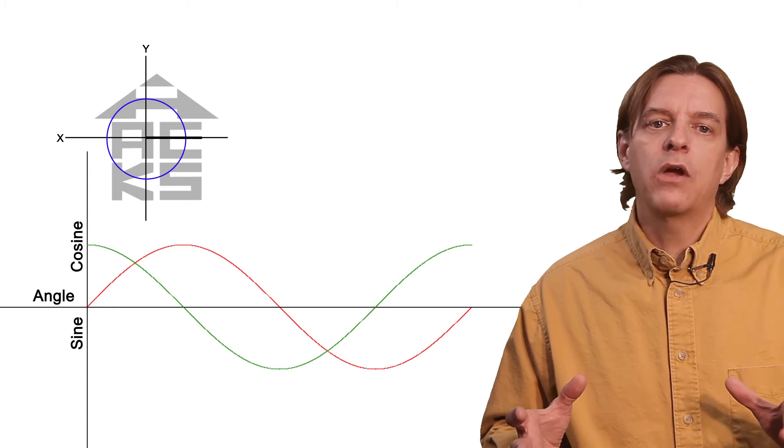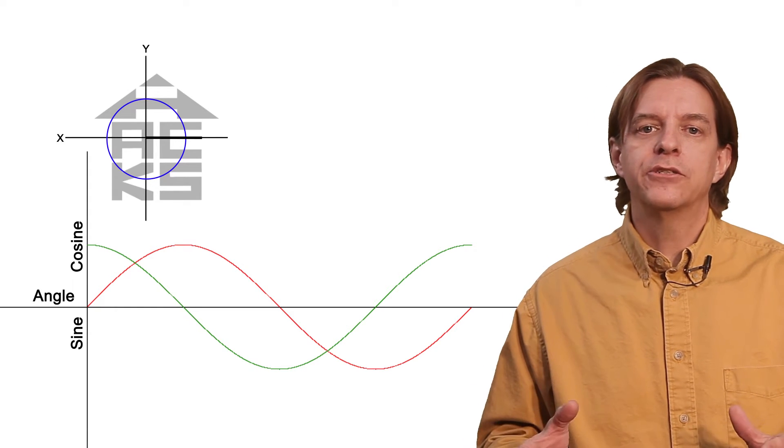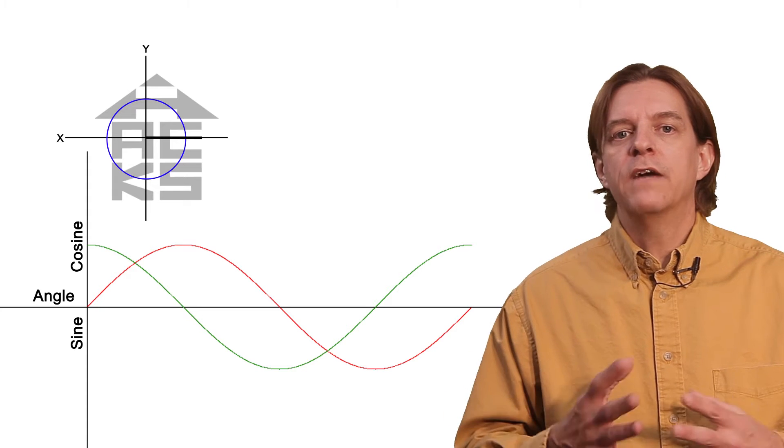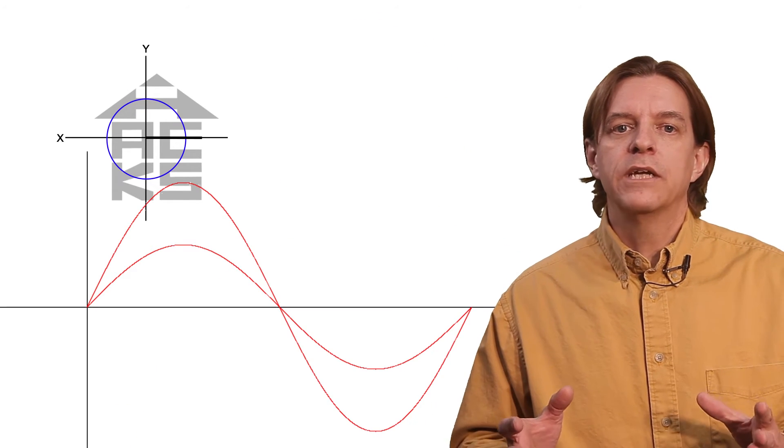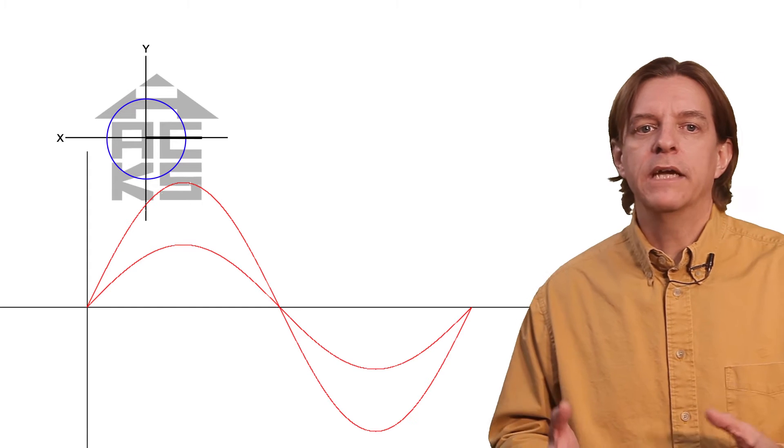These functions are great for describing a lot of things that are periodic in nature, things that fluctuate between two values. If we multiply the results of sine or cosine, we can make these graphs fluctuate by different amounts. For example, here's the result of multiplying the sine by 2.